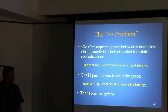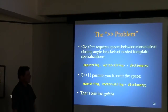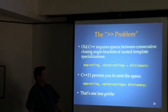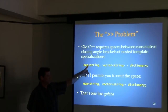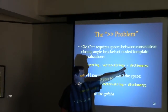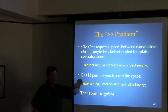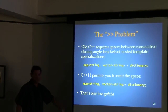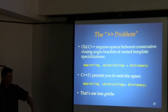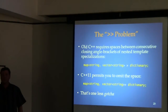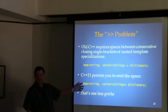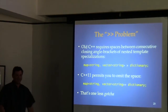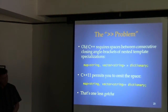This next one's easy to explain. In old C++, if you have nested template specializations, you were obliged to put a space in there — otherwise the parser would see '>>' as a double-greater-than operator. In new C++, you don't have to do that anymore.